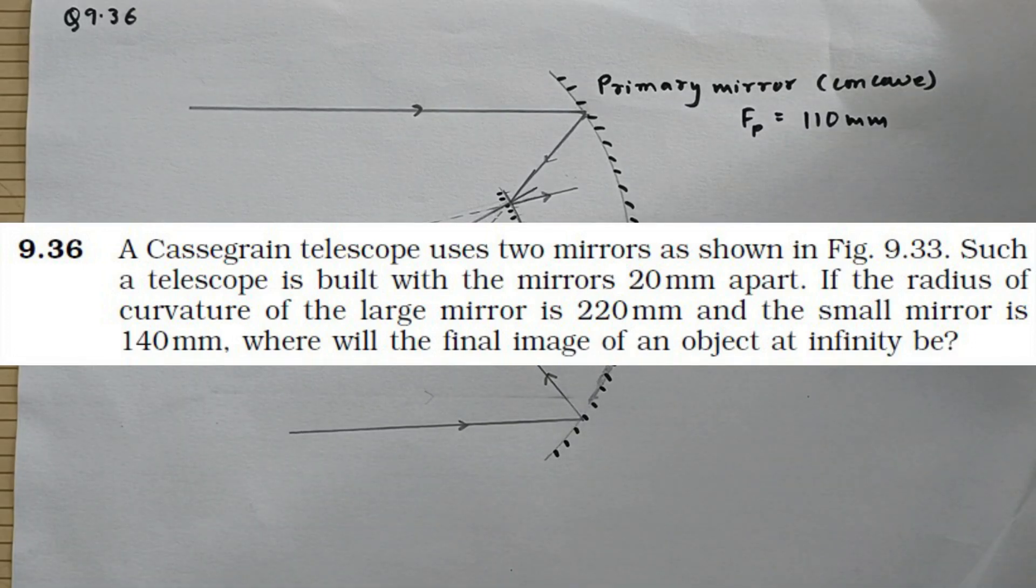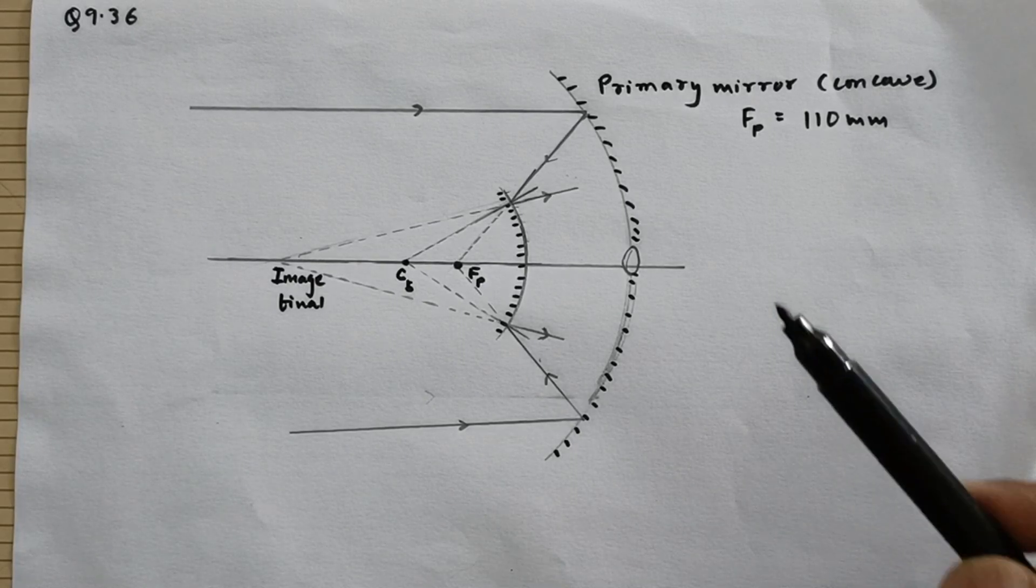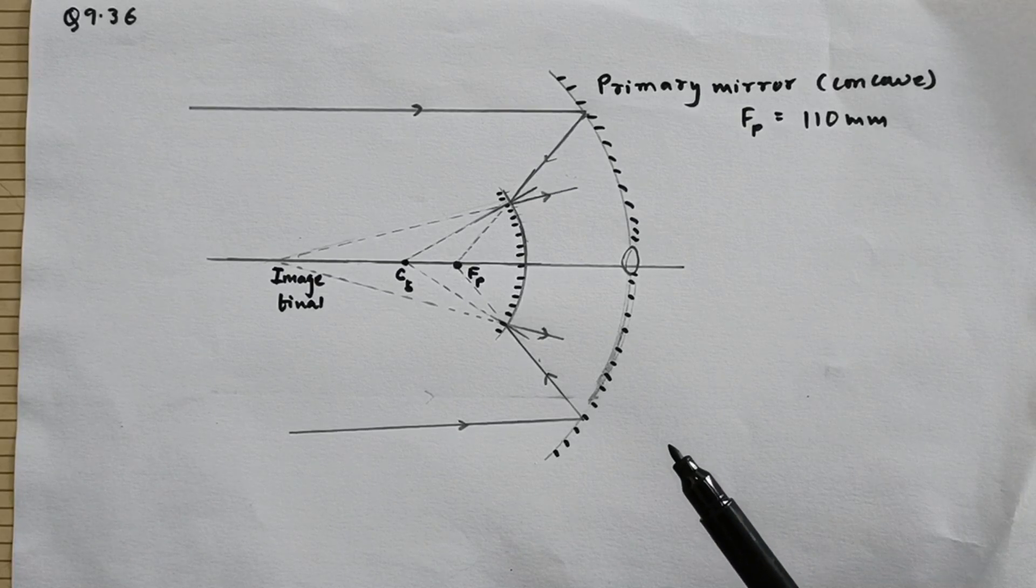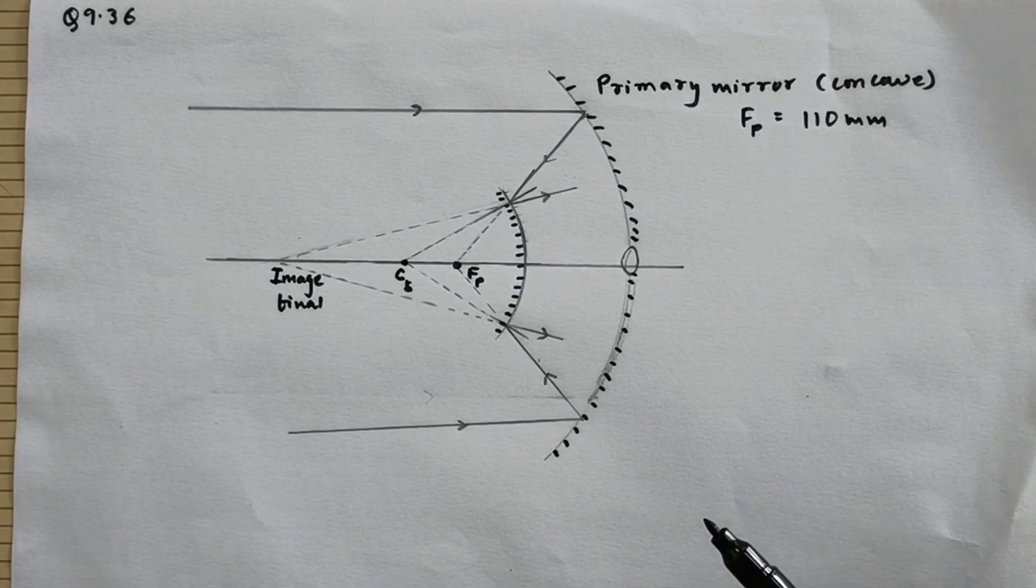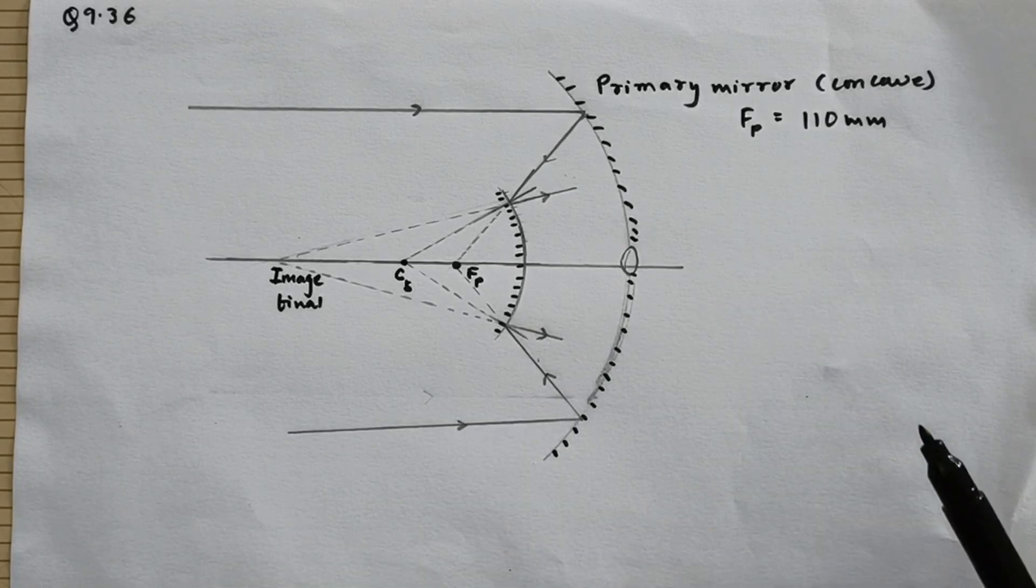Let us discuss problem number 9.36 Ray Optics, Standard 12 Physics NCERT textbook. This is a very good problem, and if you do not understand what the Cassegrain telescope is, please have a look at the description. The link is given in the description, there is a very good video which will explain you all the basics of this one.